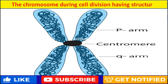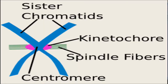During cell division, a chromosome has a distinct structure with two arms. The upper two are called p arms and the lower two are called q arms, and they are divided by the centromere. These arms are called chromatids. All chromatids are sister chromatids, which are distinguished by the centromere, also known as the kinetochore, which gets attached to spindle fibers and gets divided.